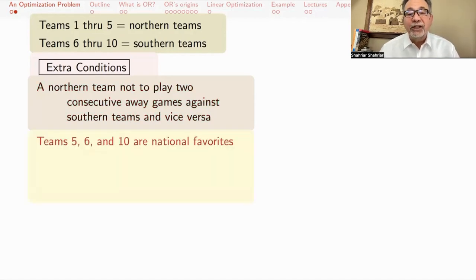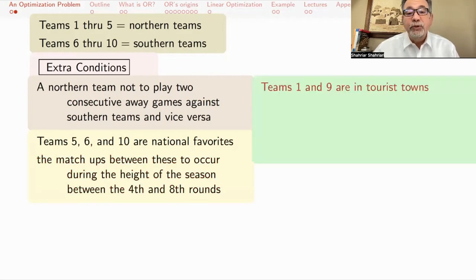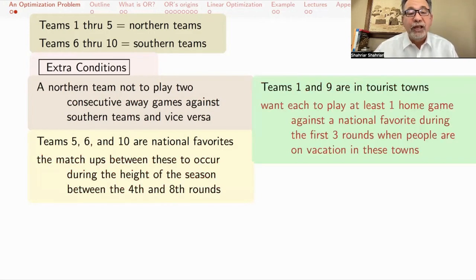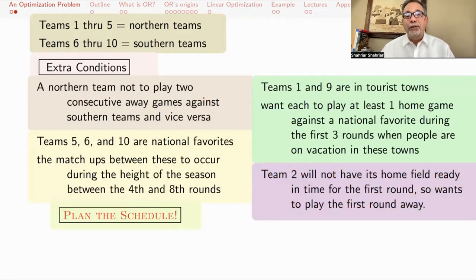A northern team is not to play two consecutive away games against southern teams and vice versa. Teams five, six, and ten are national favorites and the matchup between those is preferable to occur in the height of the season between the fourth and eighth rounds. Teams one and nine are in tourist towns. We want each to play at least one home game against the national favorites in the first three rounds when people are on vacation. Team two will not have its home field ready in time for the first round so wants to play the first round away. Your job is to plan the schedule.